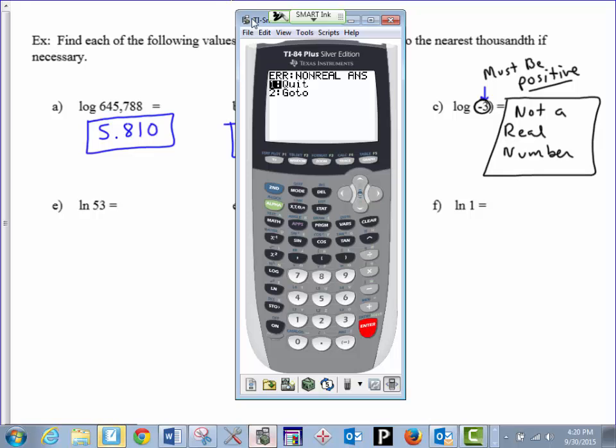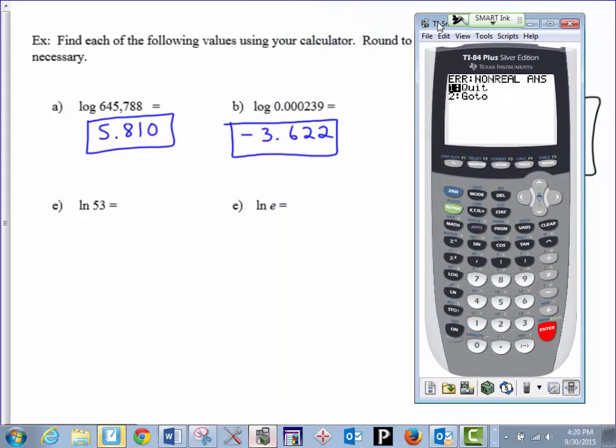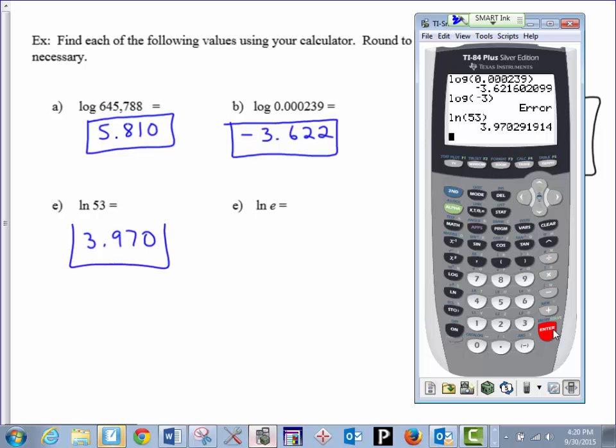Next one that we have is natural log of 53. To get out of here, you can just press second quit. The natural log button is just a little to the left and above the 4. LN, and this is 53. Close your parenthesis. This one we can see, we get 3.97, and that's 3.970 if we round to the nearest thousandth.